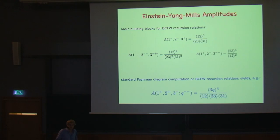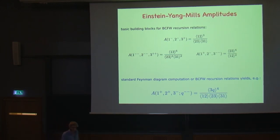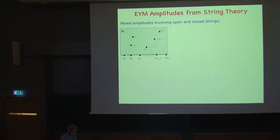What I want to show you is that when deriving MHV amplitudes from string theory, you actually get much more information and find a new form of the Einstein-Yang-Mills amplitude which you cannot easily see from field theory alone. So let's move on to string theory and discuss the Einstein-Yang-Mills amplitude at tree level in string theory.